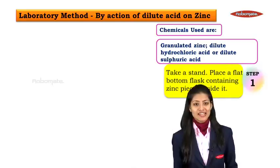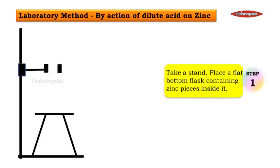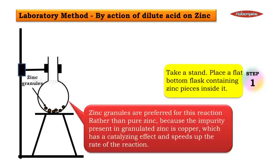Step one: take a stand and place a flat bottom flask containing zinc granules inside it. We are going to attach a round bottom flask inside which we are adding granulated zinc. Granulated zinc is preferred over pure zinc because the impurities present — copper — have a catalyzing effect and speed up the rate of reaction. That is why zinc granules are preferred.